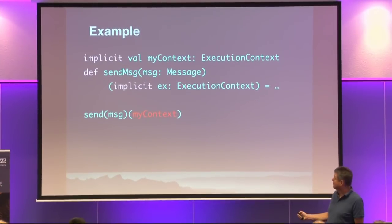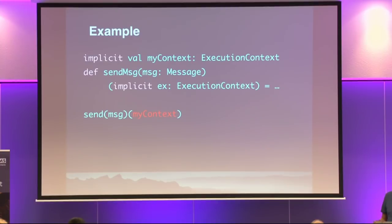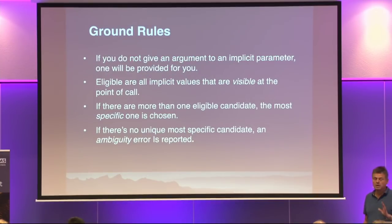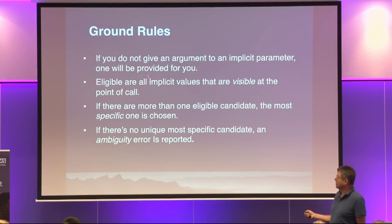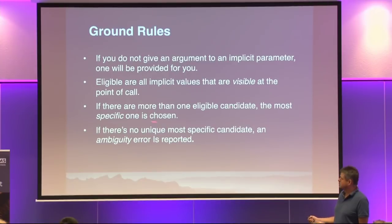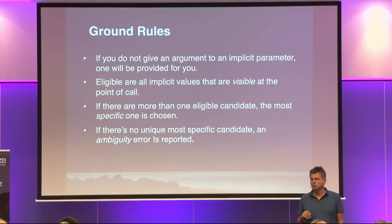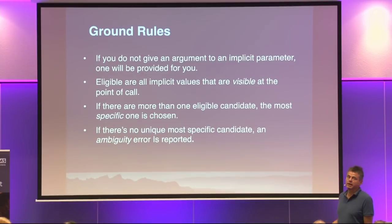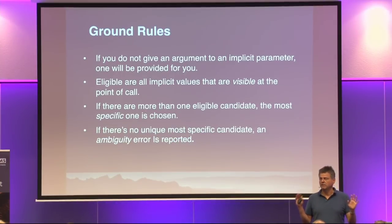So, my context will be filled in. Why? Because it demands an execution context as an implicit parameter, and it has, somewhere, an implicit import that matches the type. So, I fill in the term with the type. That's what implicit parameters do, in a nutshell. If you look at the ground rules: if you do not give an argument to an implicit parameter, one will be provided for you. Eligible are all implicit values that are visible at the point of call — typically made visible by inheritance or import or definition in the same scope. And if there's more than one eligible candidate, the most specific one will be chosen. Specific is basically the same rules as for overloading resolution. And if there's no unique more specific candidate, then you get an ambiguity.